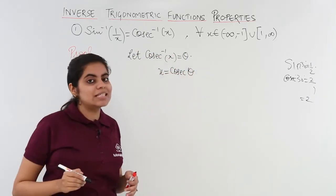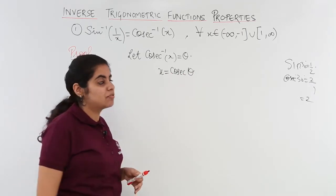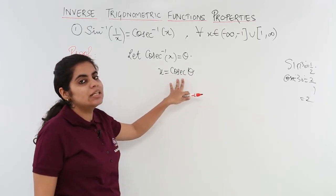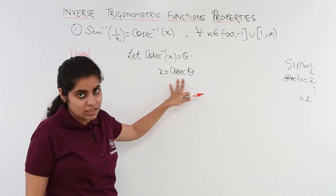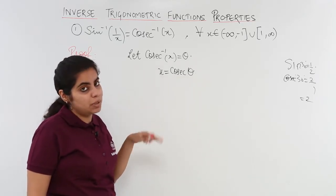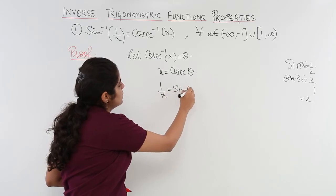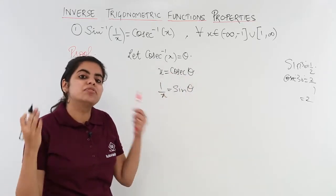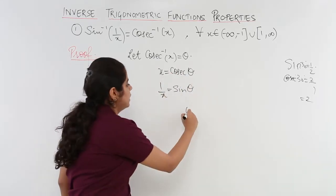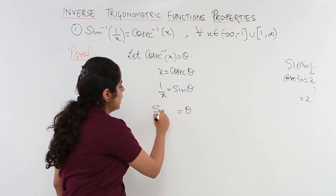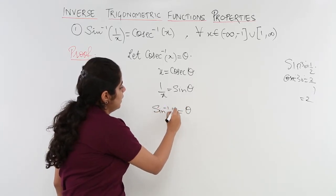And if x is equal to cosecant theta, what do I have? I have basically cosecant theta's reciprocal as sin theta. X reciprocal as 1 by x. So it becomes 1 by x is equal to sin theta. And if 1 by x is equal to sin theta, I have theta is equal to sin inverse 1 by x.